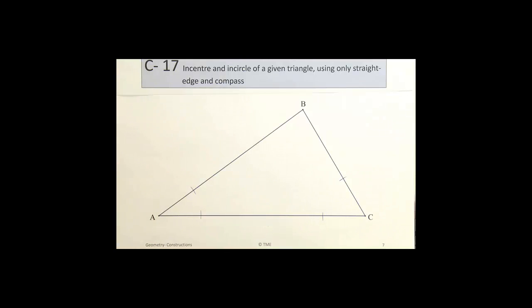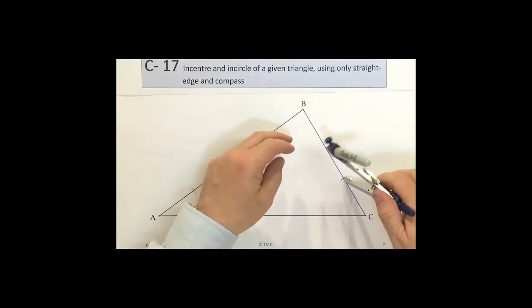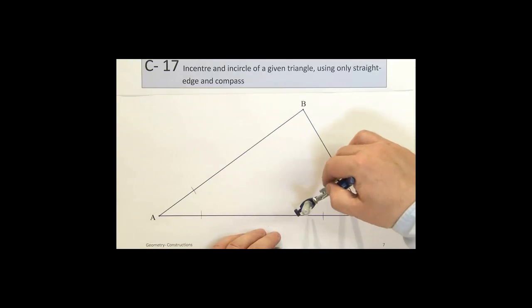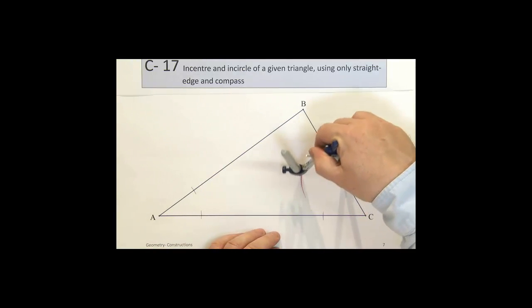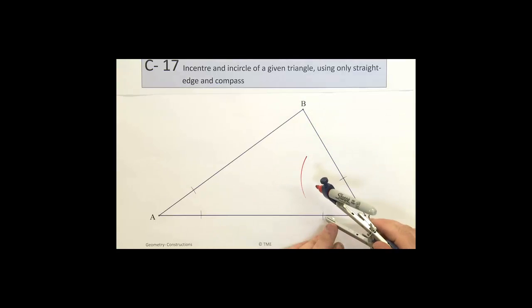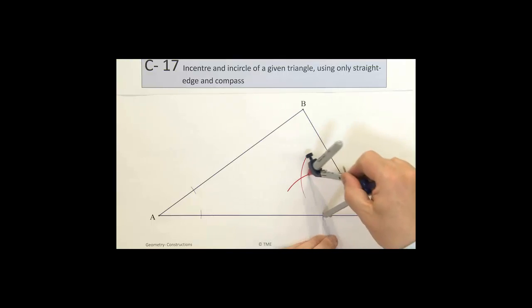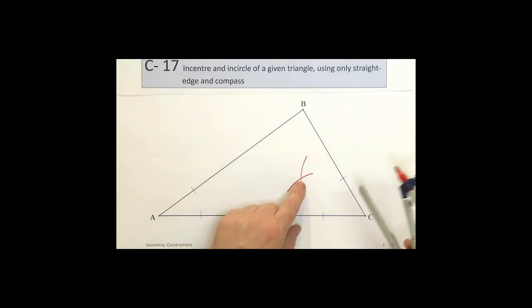What we do then is take a further line from this center here, the notch on the BC line, and draw an arc. Using the same radius, we draw an arc from the equidistant notched point on CA. We find that they cross.